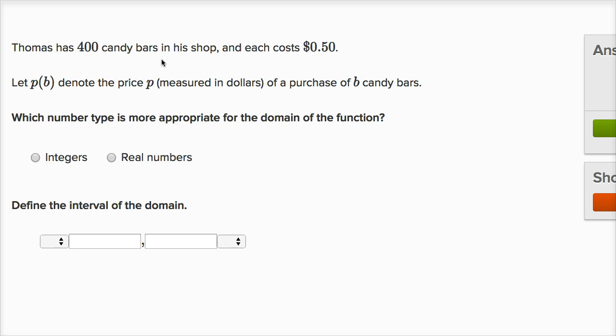each candy bar is gonna be in its own packet. It's going to be in a discrete chunk. You're not going to be able to buy 0.372 of a candy bar. You're either gonna buy one more or none more.